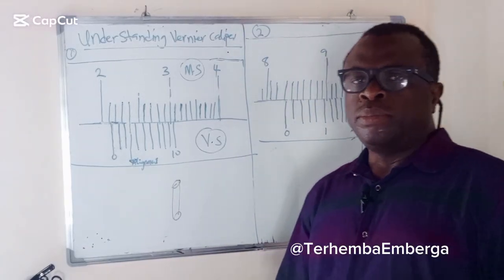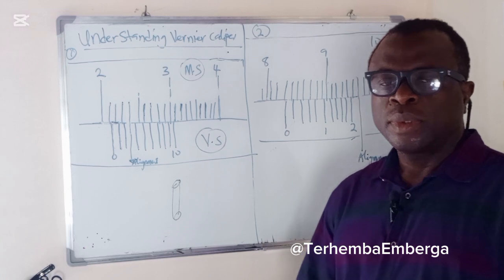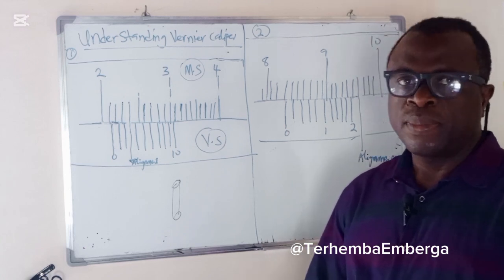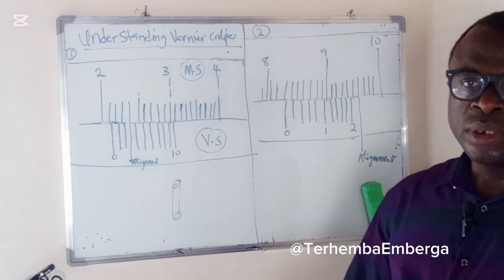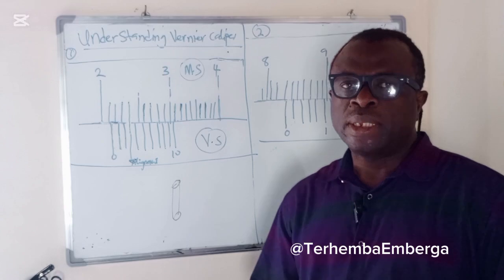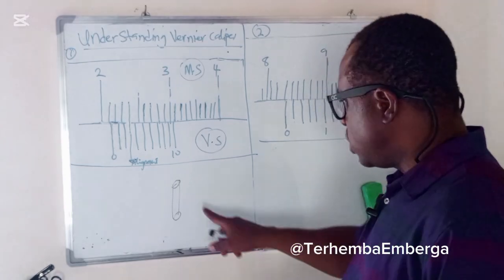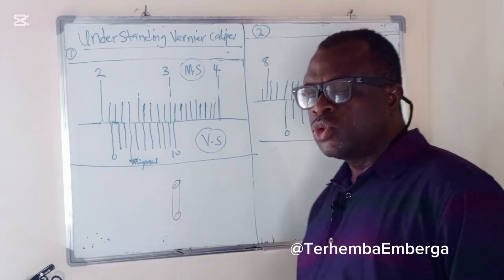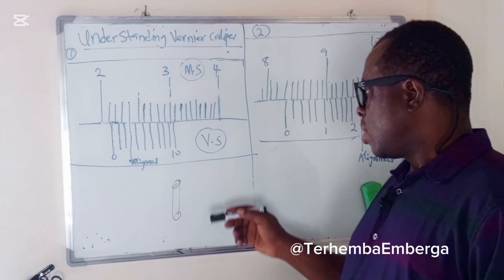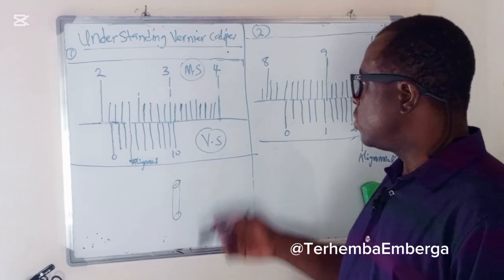Today we'll look at understanding vernier caliper. Vernier caliper is one of the instruments in the physics laboratory, and it's a precision instrument that can be used to measure both internal and external dimensions. For example, if you want to measure the dimension of a test tube, something like a bottle, you cannot use a meter rule. You have to use vernier caliper.